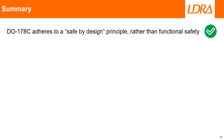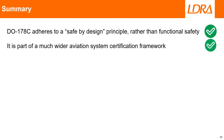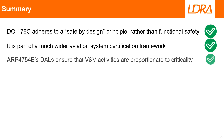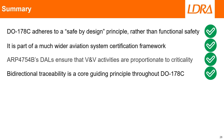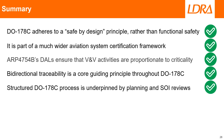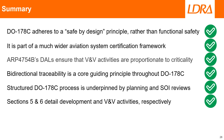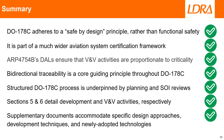To summarise: DO-178C adheres to a safe-by-design principle rather than functional safety. It is part of a much wider Aviation System Certification Network. ARP 4754B's DALs ensure that V&V activities are proportionate to criticality. Bidirectional traceability is a core guiding principle throughout DO-178C. The structured DO-178C process is underpinned by planning and SOI reviews. Sections 5 and 6 detail development and V&V activities respectively. Supplementary documents accommodate specific design approaches, development techniques and newly adopted technologies.